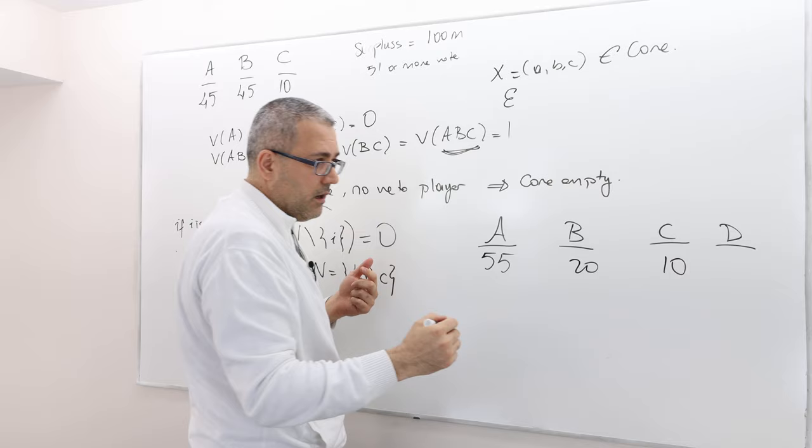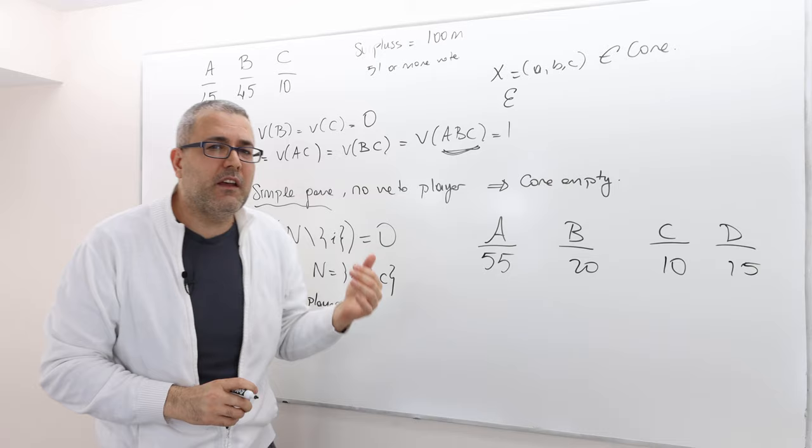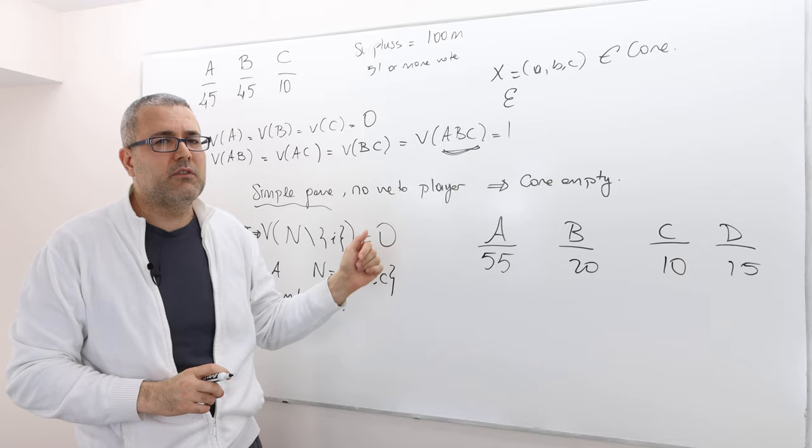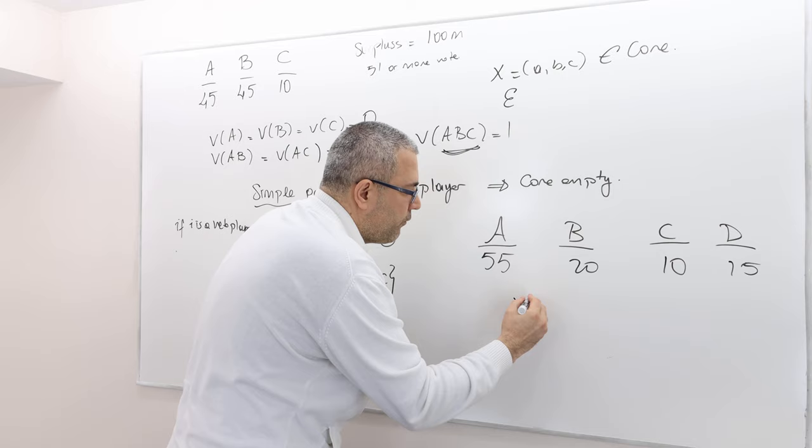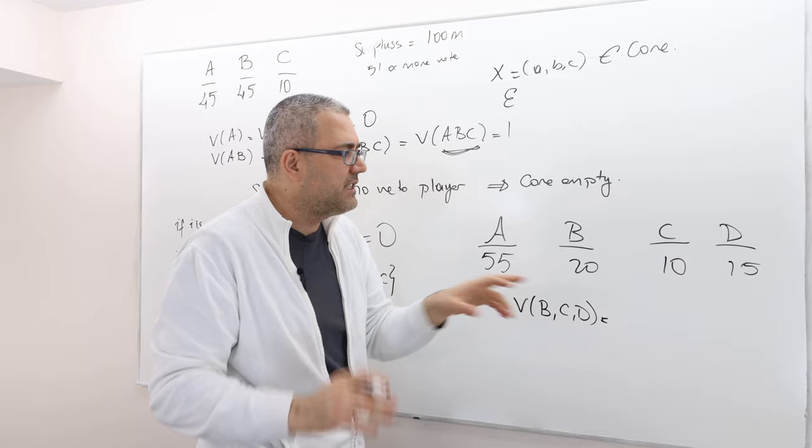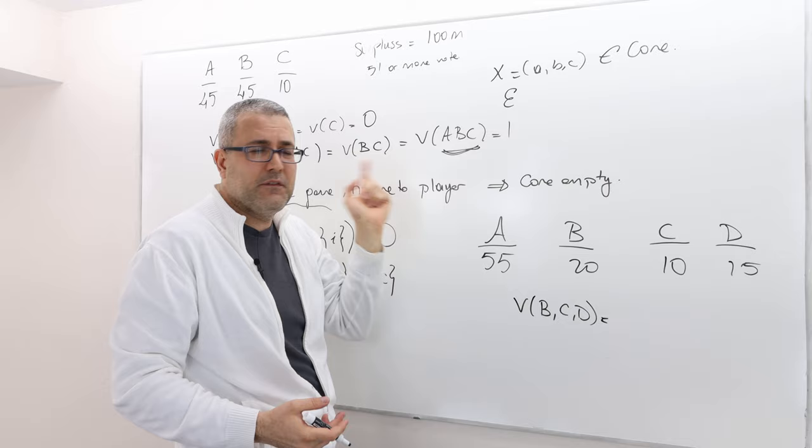So for example, do we have a veto player in this environment? Yes. Who is this political party A, right? If you subtract political party A, what is the worth of political party B, C, and D? Well, remember the total seats they have is 20, 30, 45, less than majority 51. So therefore the worth is zero.